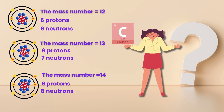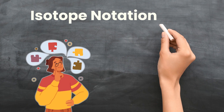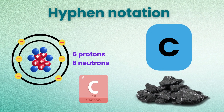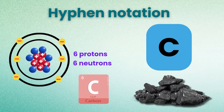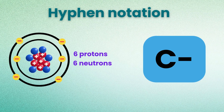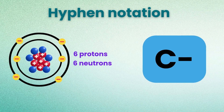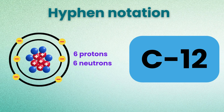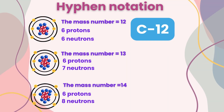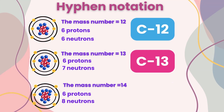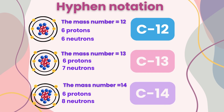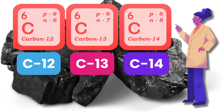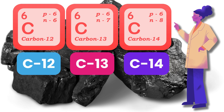So how do we write them differently? Isotope notation. One method is hyphen notation. First, write the element symbol — C for carbon. Step two, add a hyphen. And step three, write the element's mass number. So mass number 12 gives C-12. The other two isotopes of carbon will be C-13 and C-14. And we call them carbon-12, carbon-13 and carbon-14.